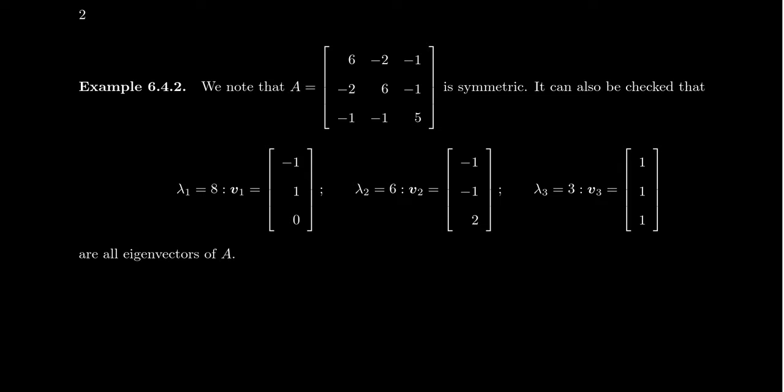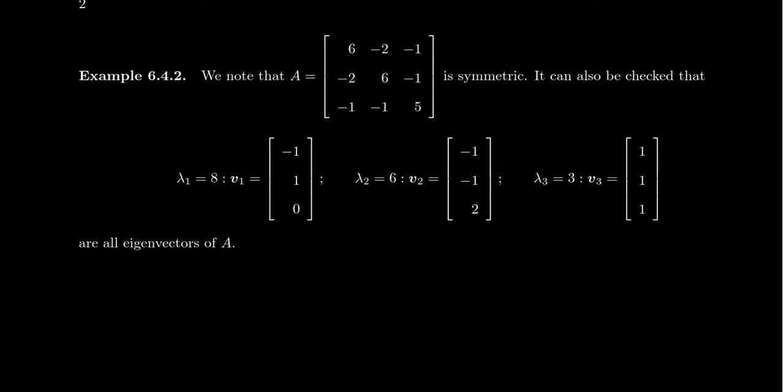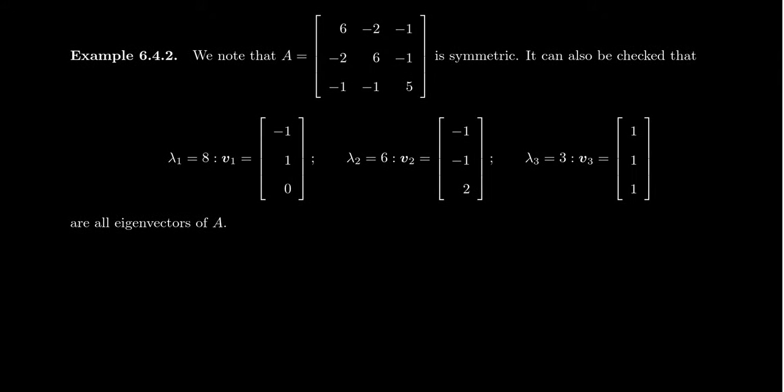So again, we're not going to go through the details of this, but one could go through the whole enchilada and find these eigenvectors and eigenvalues. What I want to proceed to do is show you that these eigenvectors are, in fact, orthogonal with each other. So if we take the first eigenvector, V1, and dot it with V2, the dot product would give us negative 1 plus 1 plus 0, which is equal to 0. So we see that V1 is orthogonal to V2, as to be expected.